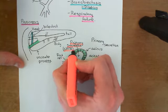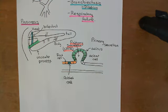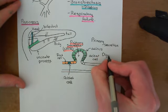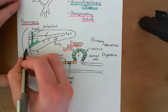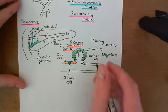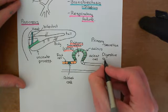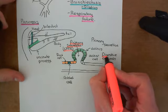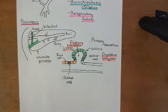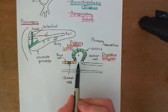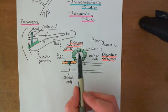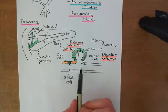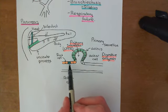The acinar cells actually do more than produce the primary secretion. They also chuck digestive enzymes into the primary secretion — enzymes that are going to be delivered to the duodenum lumen to digest things in food. So digestive enzymes are also put into the primary secretion by the acinar cells. This primary secretion containing digestive enzymes is then delivered into the duct by the acinus.